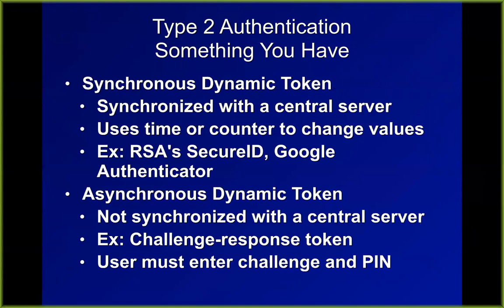Type 2 authentication is something you have — a card or something you carry around like RSA SecureIDs, or an app on your phone like Google Authenticator, or a text message sent to your phone. There are synchronous dynamic tokens that just change according to a clock and numbers look random but are predictable, and the server predicts them too. There are asynchronous dynamic tokens where you type in a number you see on the website and get an answer.